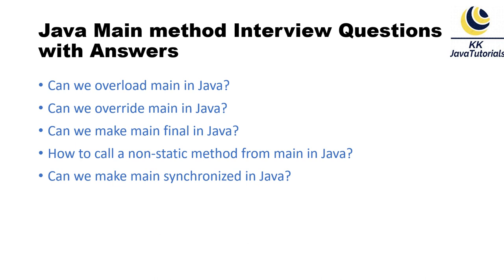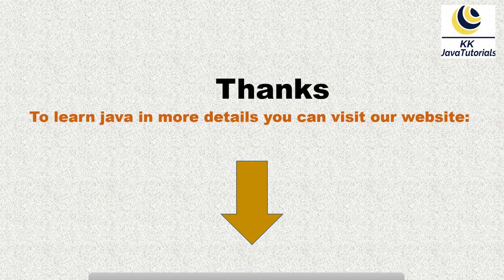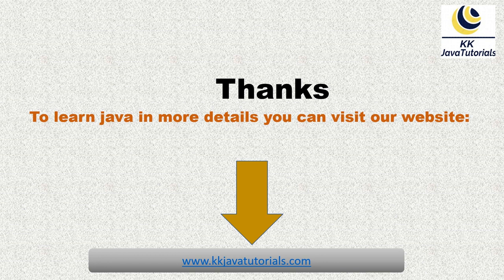Here is a summary of what we discussed: the main method is a static method; you can overload it but you cannot override it; you can make the main method final; you can make it synchronized; and you cannot call a non-static method from main directly, but you can do so using an object reference. Keep these points in mind for interviews. Thanks for watching — visit kkjavatutorials.com for more detail, and see you in the next video!